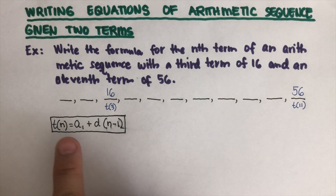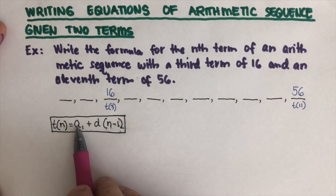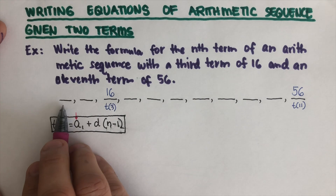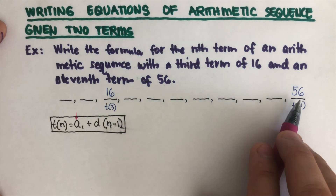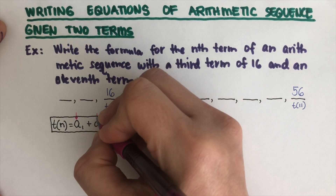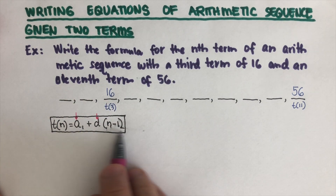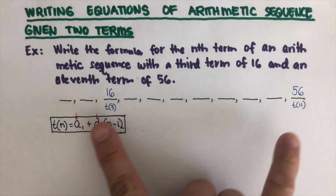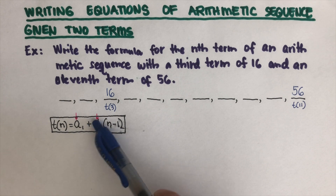This is our working equation, but there's a problem: a1, the first term, is missing, and we don't know the common difference d. These two values are missing from the equation. We're going to use the two pieces of given information to find them.